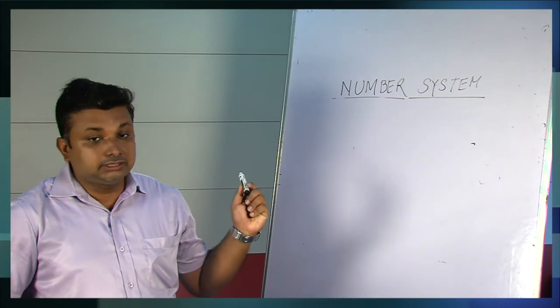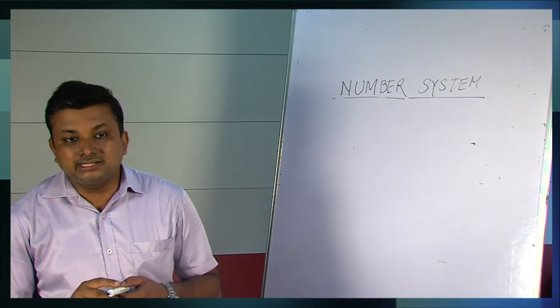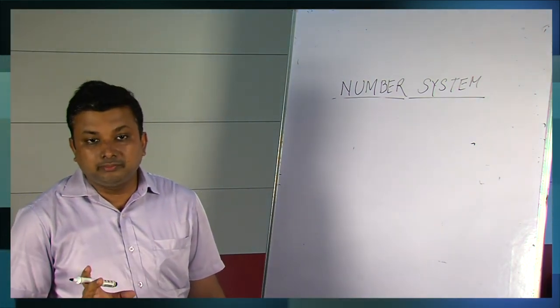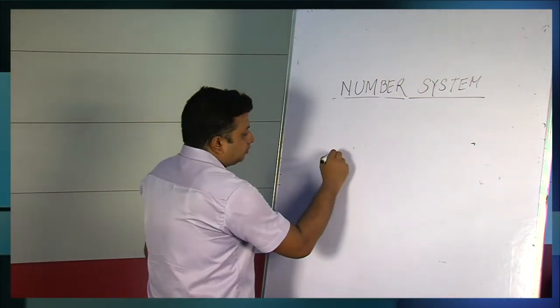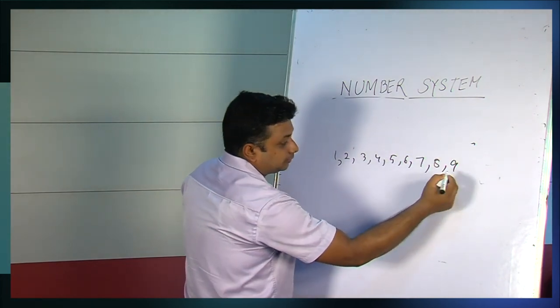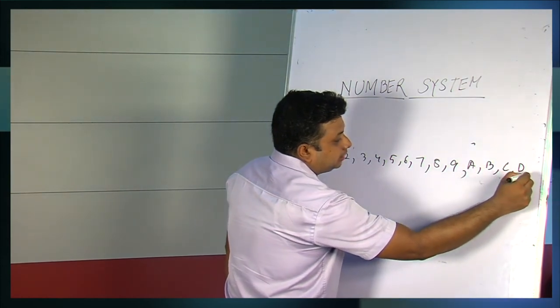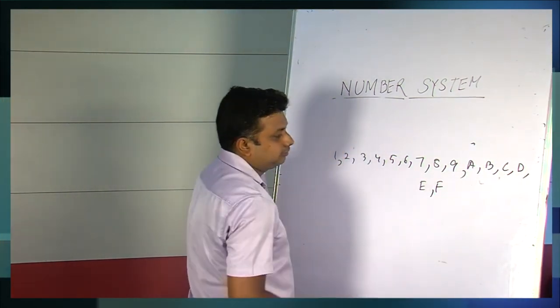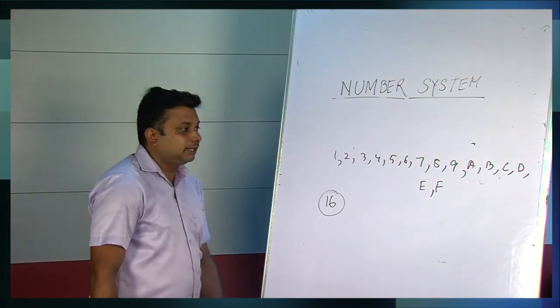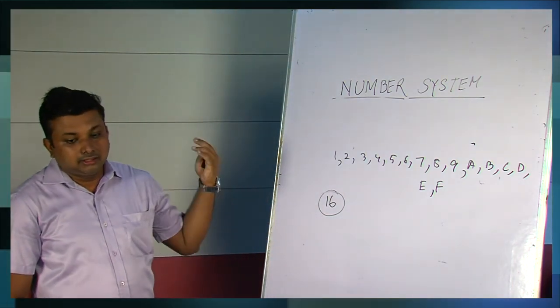So we have discussed till now decimal, binary and octal. Now comes the most interesting one, that is the hexadecimal number system. Why it is interesting? Because it uses alphanumeric characters. 0, 1, 2, 3, 4, 5, 6, 7, 8, 9, it's up to 9. After 9 it uses the alphabets A, B, C, D, E, F. So it consists of total 16 alphanumeric characters to represent a hexadecimal number system. So its base is 16.